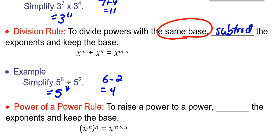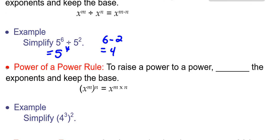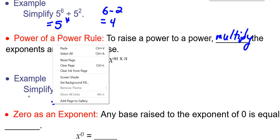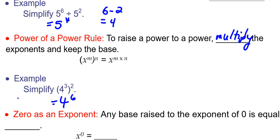The next rule happens when we are raising a power to a power. When we raise a power to a power, we multiply the exponents and keep the base. So (4^3)^2 becomes 4^6 because 3 × 2 is 6.